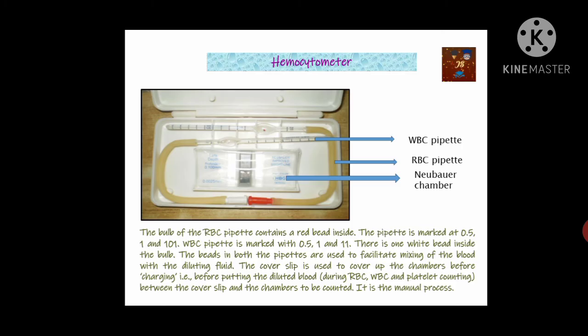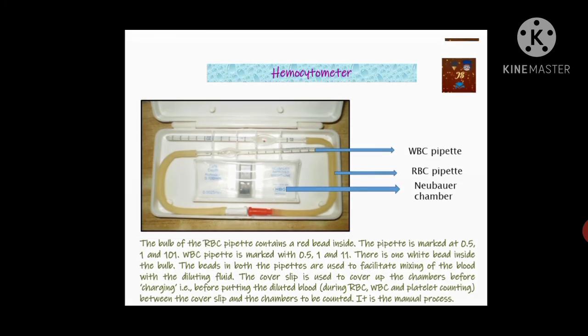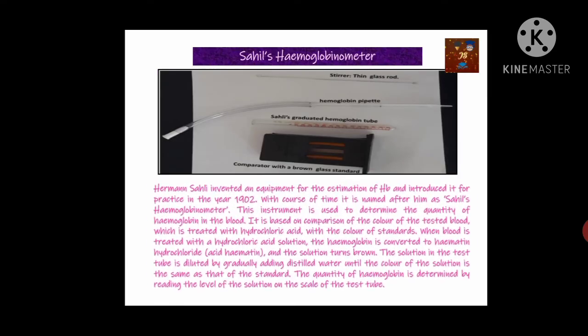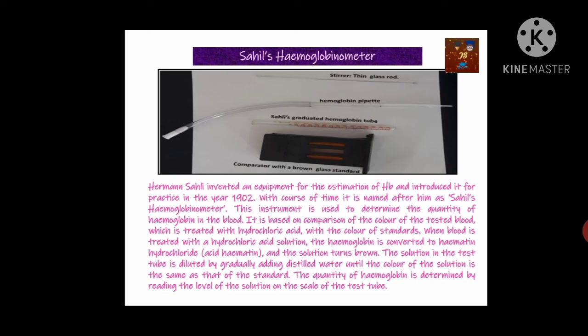We can identify the WBC and RBC pipettes by means of the beads inside the bulb. In the WBC pipette there is a white bead in the bulb, and in the RBC pipette there is a red bead in the bulb. This hemocytometer is helpful for the counting of total RBCs, WBCs, and platelets.